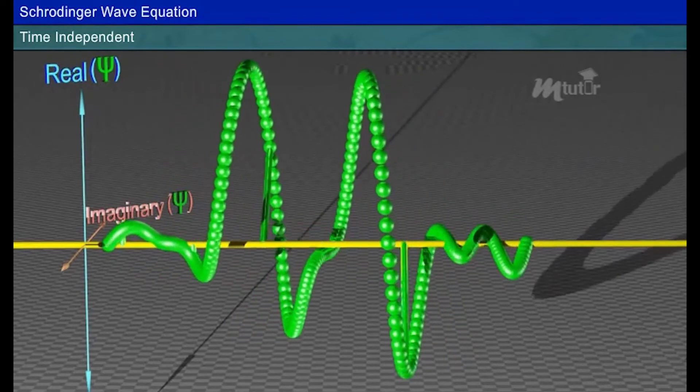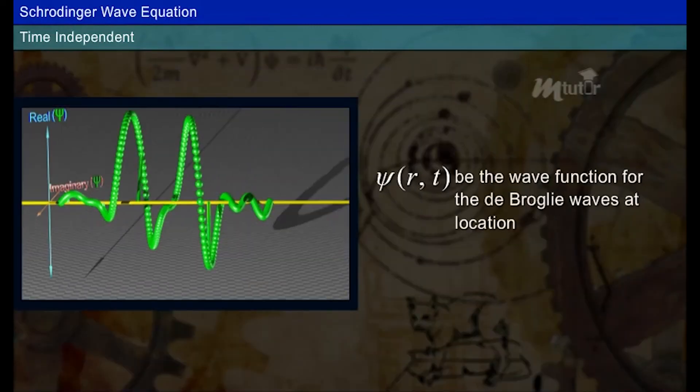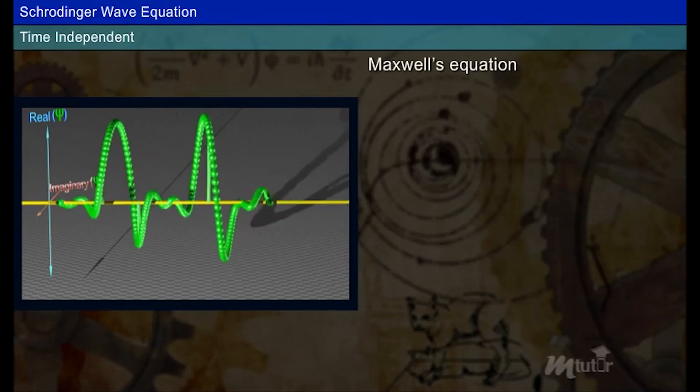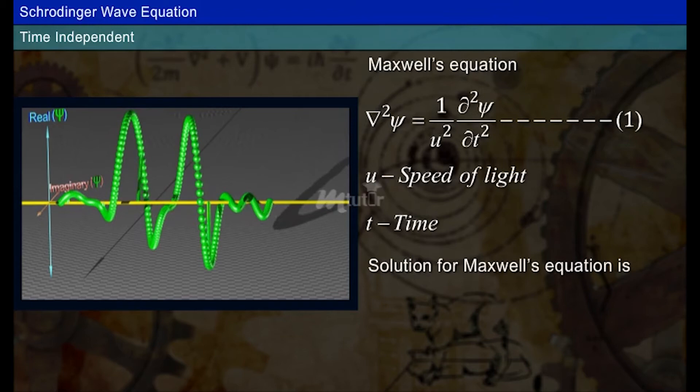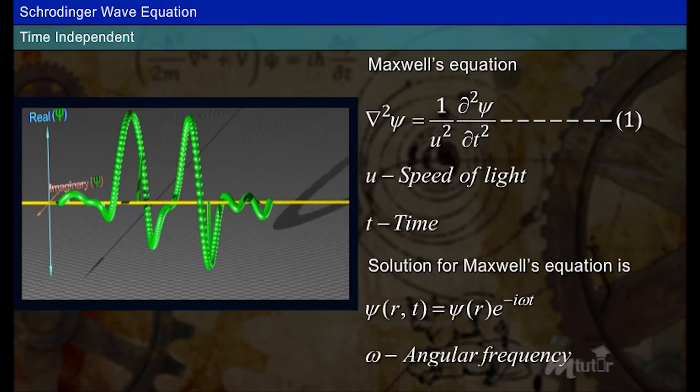Let us see Schrödinger time-independent wave equation. Let psi(r,t) be the wave function for the de Broglie waves at location r, which is equal to r cap equals i cap x plus j cap y plus k cap z. Maxwell discovered that light was described by waves. Let us consider Maxwell's equation as equation 1, where u is speed of light and t is time. The solution of Maxwell's equation is psi(r,t) equals psi(r) e to the power minus i omega t, where omega is angle of frequency.